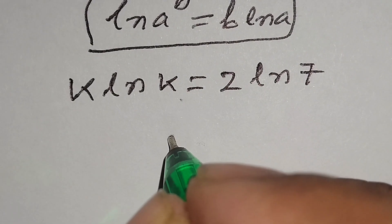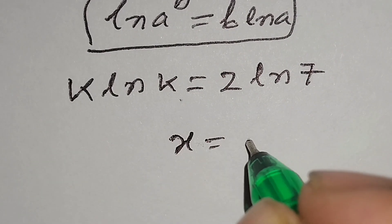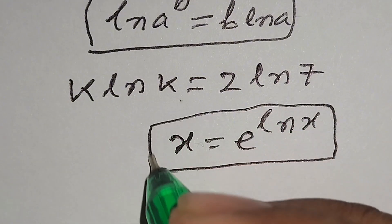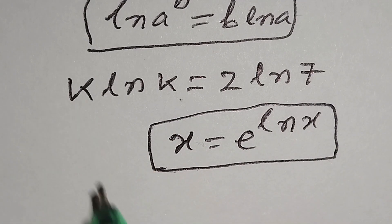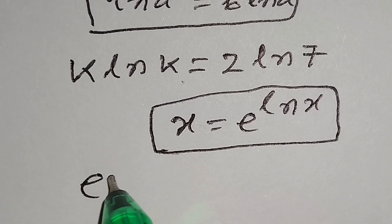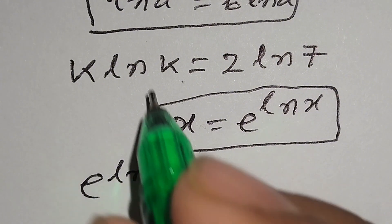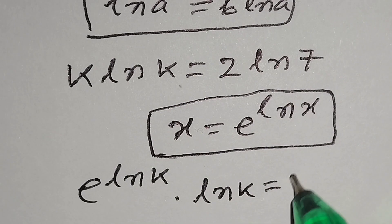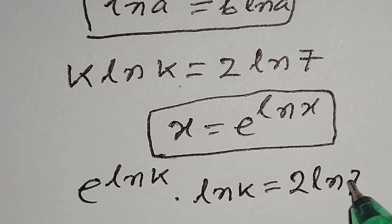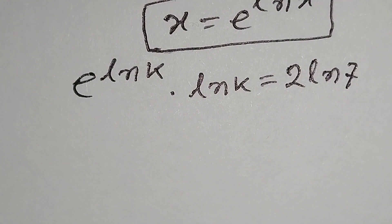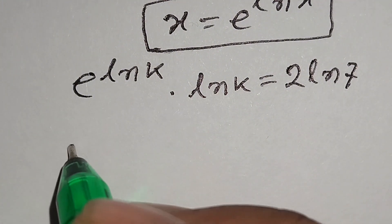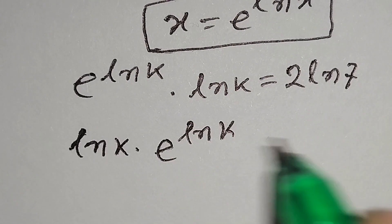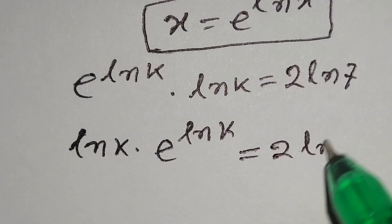We know that x is equal to e to the power ln x. According to this formula, we can write k as e to the power ln k. So the expression becomes: ln k times e to the power ln k is equal to 2 times ln 7.